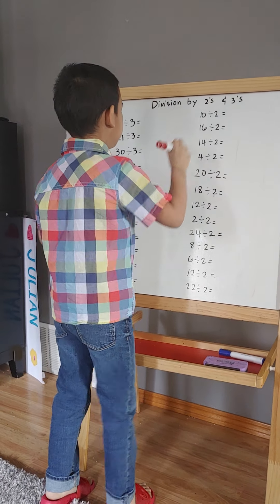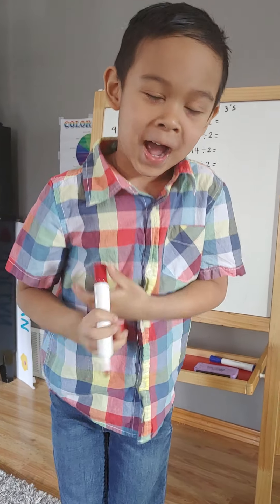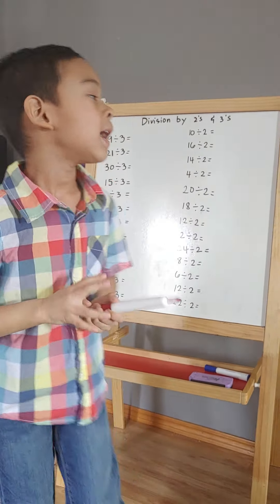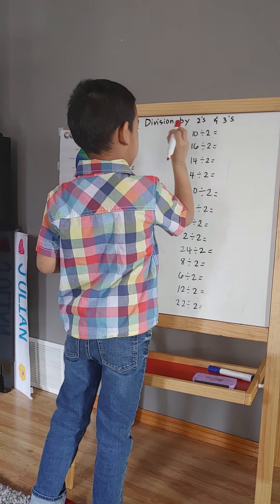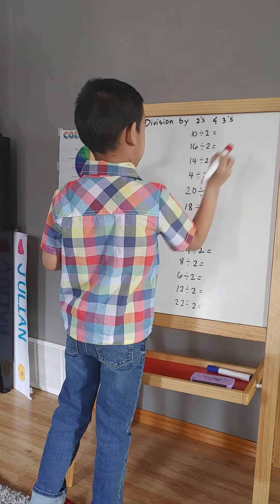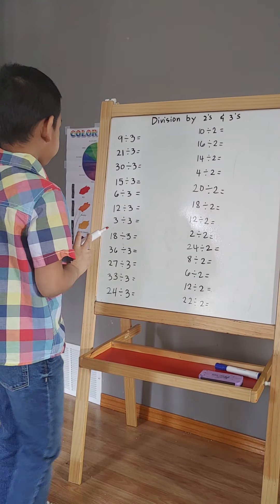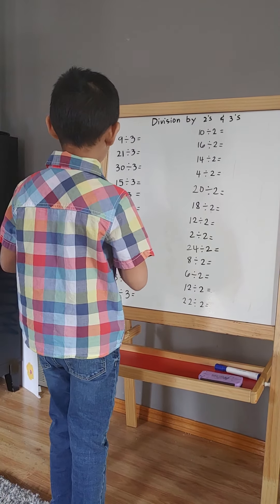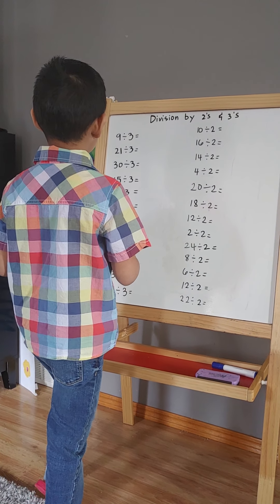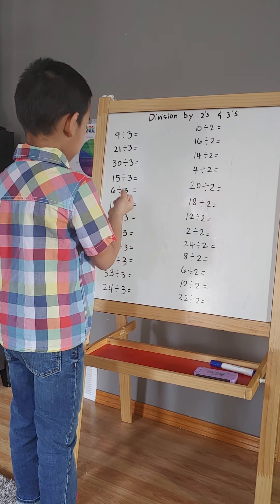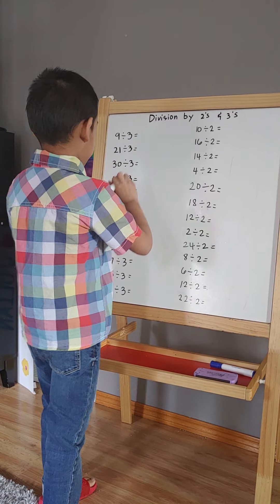Julian. Hi guys, today is the division by 2 and 3. Now Baba, mine was 9 divided by 3. 3, 6, 9. 3.